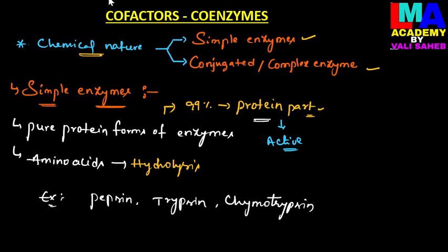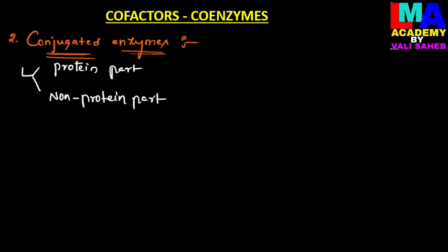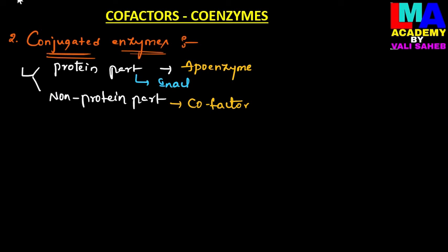Conjugated or complex enzymes are made up of both a protein part and a non-protein part. The protein part is called apoenzyme, and the non-protein part is called cofactor. If we observe the chemical structure of a conjugated enzyme, it consists of both parts, but the protein part present in the conjugated enzyme is inactive on its own.